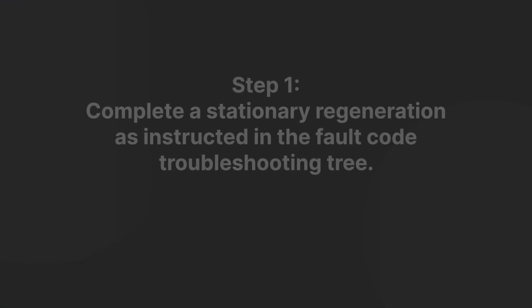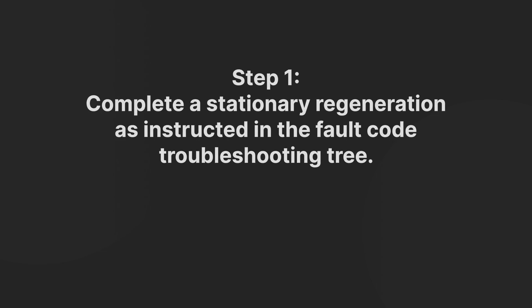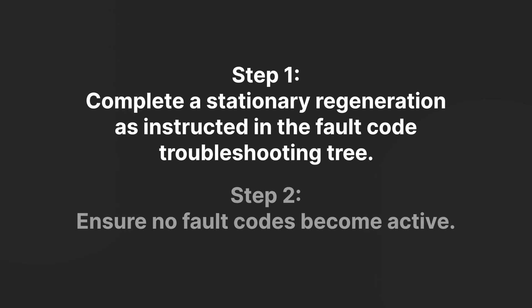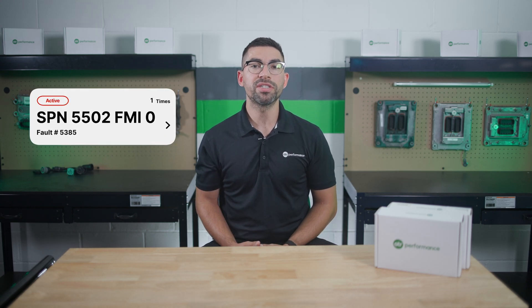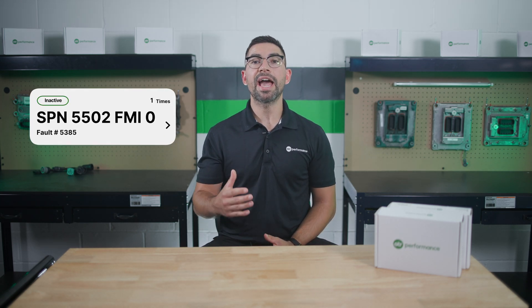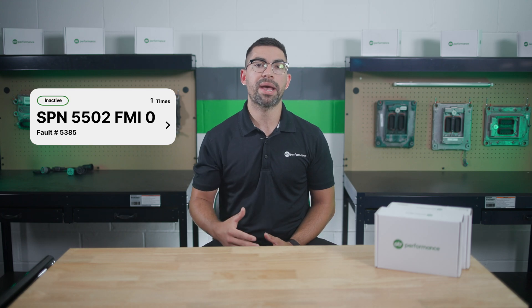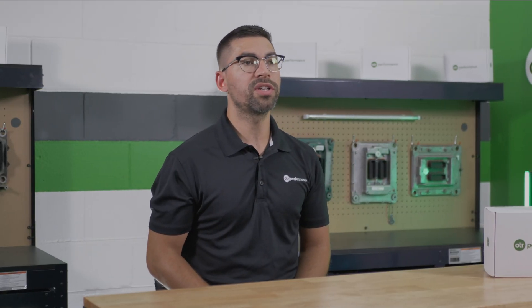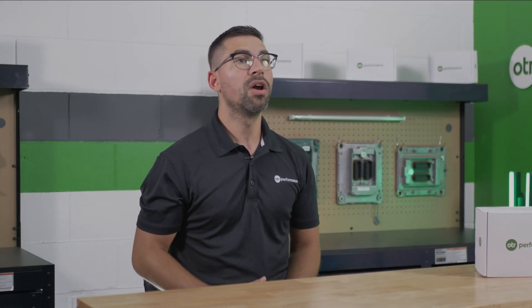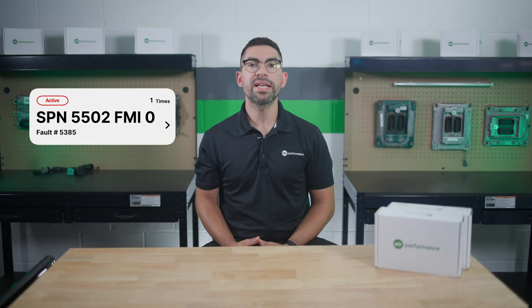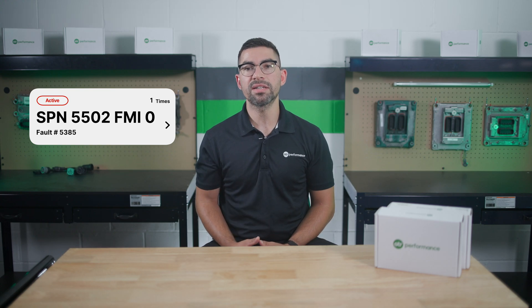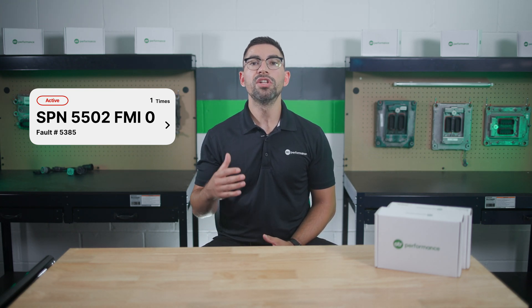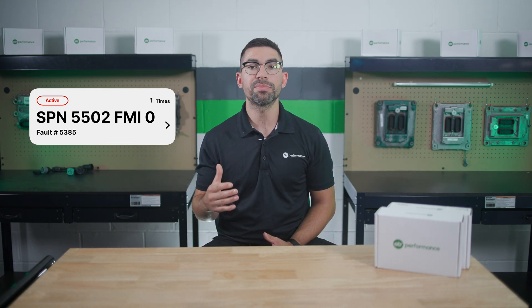To clear this fault code, follow these steps: complete a stationary regen as instructed in the fault code troubleshooting tree, and ensure no fault codes become active. The fault code status displayed by OTR Diagnostics will change to inactive immediately after the diagnostic runs and passes. You can also use OTR Diagnostics to clear the MIL light or check the status of the fault code. This fault code indicates that the engine has been operating in conditions that prevent the exhaust temperatures from being high enough to actively regenerate the diesel particulate filter.